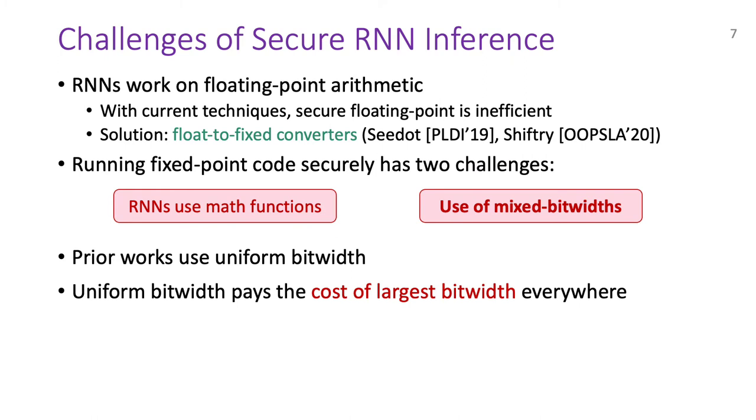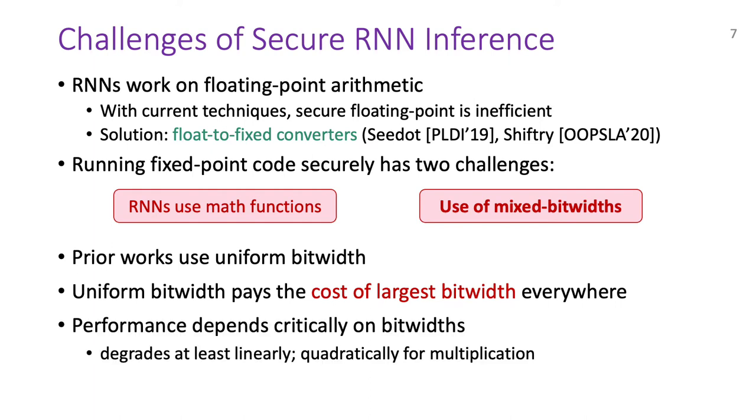Although there are existing solutions for some of these functions, they are either imprecise, thus their applicability is unclear, or they have huge performance overhead. The second challenge is that the output fixed-point code uses a mix of different bit widths. All prior works use a single bit width uniformly for all the values, and as a result, they pay the cost of the largest bit width everywhere. For example, in the networks we evaluate, there is a mix of 8, 16, and 32-bit widths, which is replaced by 64 everywhere if uniform bit width is used.